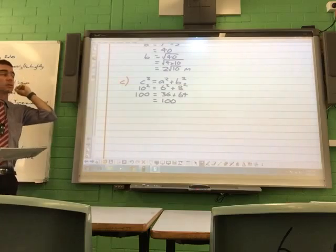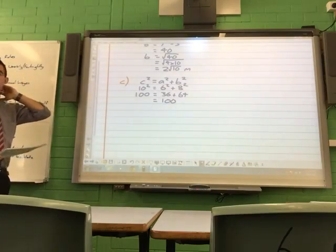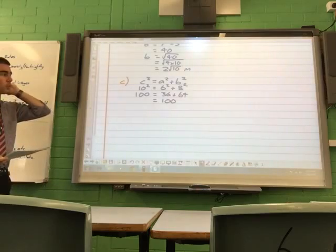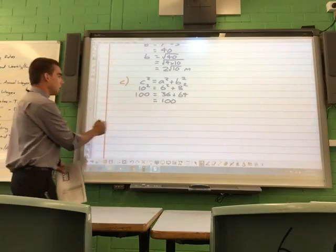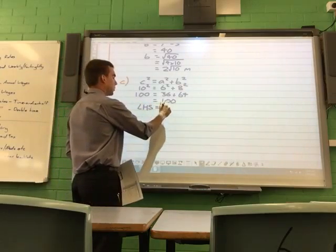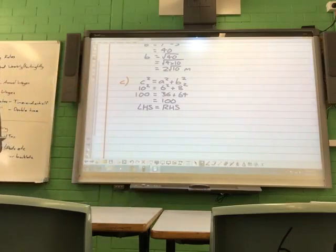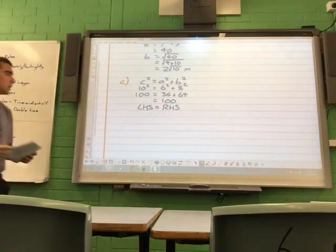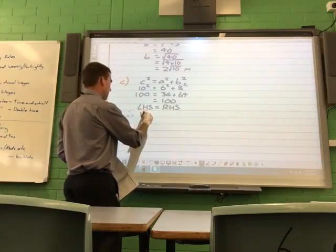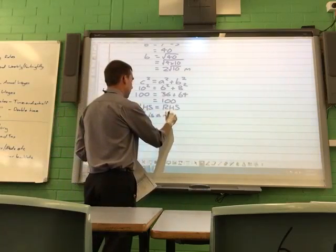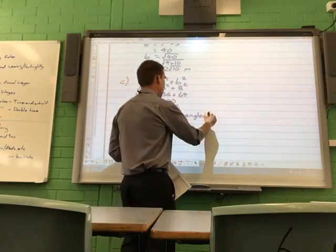You may also recognise this as a Pythagorean triad, in the case where three numbers does form a right angled triangle, one of the more common ones. So, we finish up. So, LHS for left-hand side is equal to RHS, the right-hand side. Therefore, it is a right angled triangle.